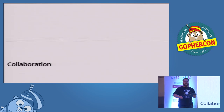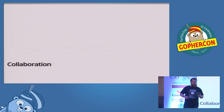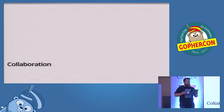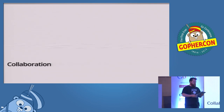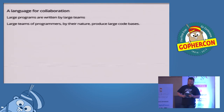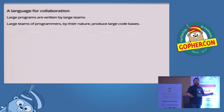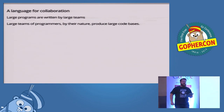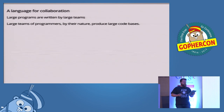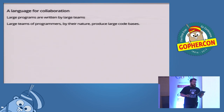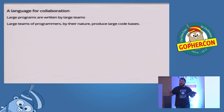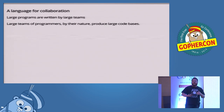And importantly, as engineers, we have to work together as a team. There's more to the success of Go than just being simple, and this is the realisation that for a programming language to be a success, it must co-exist in a much larger environment. Large programs are written by large teams — this doesn't seem controversial. The inverse is also true: large teams of programmers, by their nature, produce large code bases. Projects with big goals necessitate big teams, and their output will be commensurate with that. This is really the nature of our work as professional programmers.